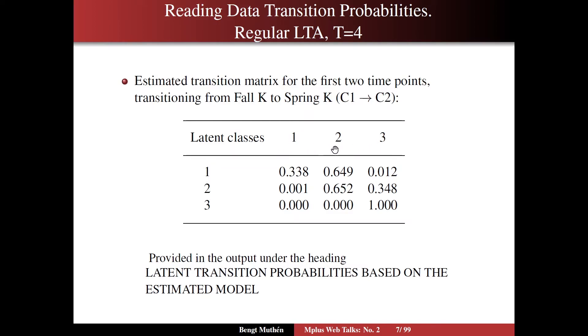The latent classes are then both the columns and the rows. For those who started in fall of kindergarten in class one, you have a 34% chance of staying in that class, 65% chance of moving on to class two, which is desirable, and a very small chance of jumping all the way to class three in spring of kindergarten. If you belong to class two at the start of kindergarten, you have almost 0% chance of falling back, of unlearning what you knew at the end of kindergarten. You have a sizable chance of staying in the same class at the end of kindergarten. And you have a bit of a chance to move on to class three at the end of kindergarten. If you are fortunate enough to start in class three in kindergarten fall, you are certain to stay there at the end of kindergarten. So you see this characteristic of zeros in the lower triangular part of the matrix, so that people move forward and don't fall back.